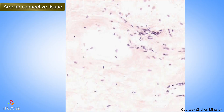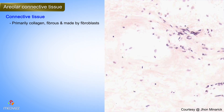Let's talk about connective tissue. Connective tissue is primarily collagen fibrils made by spindly fibroblasts. It is one of the most common and abundant types of tissue throughout the entire body because basically it's what holds everything together.